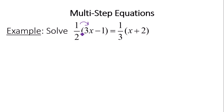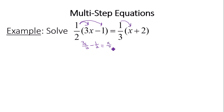1/2 times 3x gives you 3x/2. 1/2 times negative 1 will be negative 1/2. 1/3 times x gives you x/3. And 1/3 times 2 gives you plus 2/3.